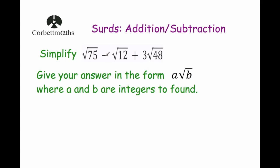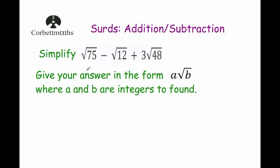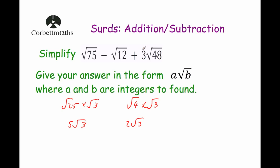Our next question: simplify Root 75 subtract Root 12 plus 3 lots of Root 48, giving the answer in the form A Root B. Root 75: the largest square factor is 25, so Root 25 times Root 3 equals 5 Root 3. Root 12: that's Root 4 times Root 3, which is 2 Root 3. For 3 Root 48: the largest square factor of 48 is 16, so it's 3 lots of Root 16 times Root 3, which is 3 lots of 4 Root 3, giving 12 Root 3.